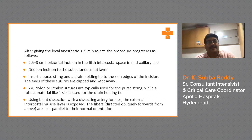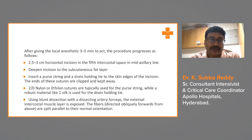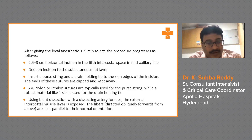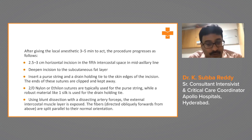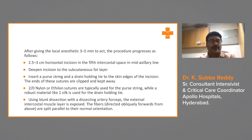After giving local anesthetic three to five minutes to act, make a 2.5 to 3 cm horizontal incision in the fifth intercostal space in the mid-axillary line and deepen to the subcutaneous fat layer. Insert a purse-string or drain-holding suture tied to the skin edge — ends clipped and kept aside. 2-0 nylon or ethylon is used for the purse string, while a robust material like 1-0 silk is used for the drain-holding suture. Using blunt dissection with artery forceps, expose the external intercostal muscle and split the fibers parallel to their orientation.